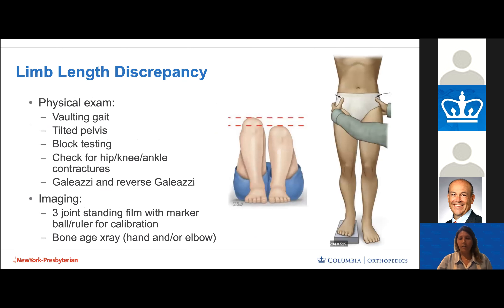Block testing helps level the pelvis to estimate limb length difference. Always check hip, knee, and ankle contractures contributing to apparent differences. The Galeazzi test shows femoral differences; the reverse Galeazzi in prone position shows tibial differences. We utilize a three-joint standing x-ray with a marker ball for calibration, as well as a bone age x-ray to determine whether skeletal age is commensurate with chronologic age when calculating limb length difference.